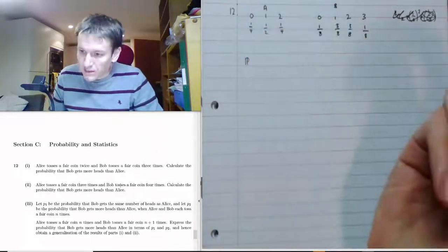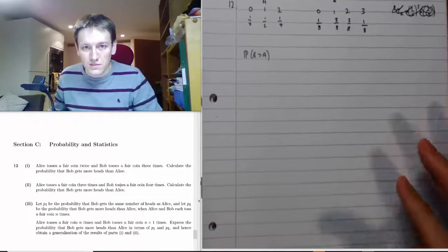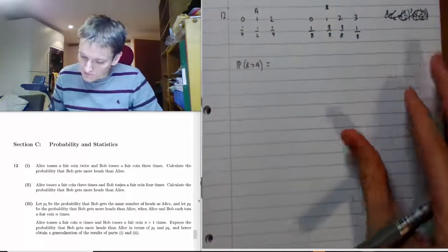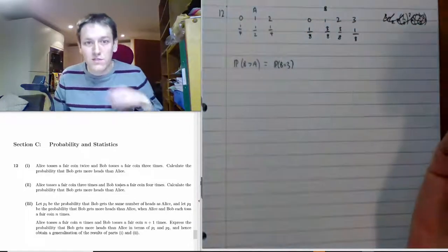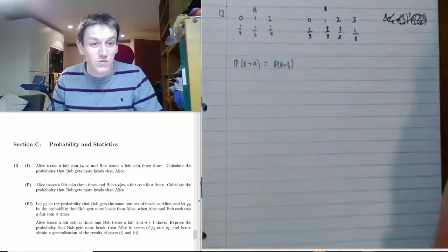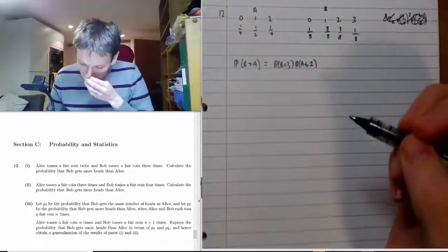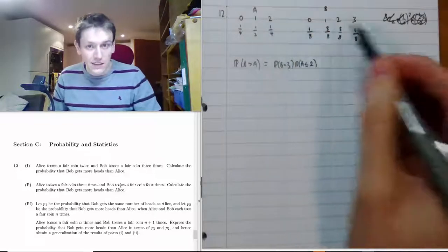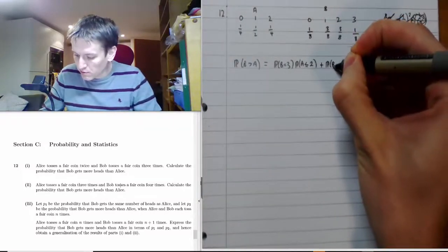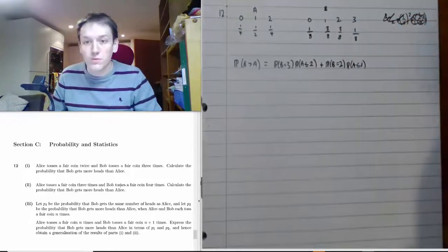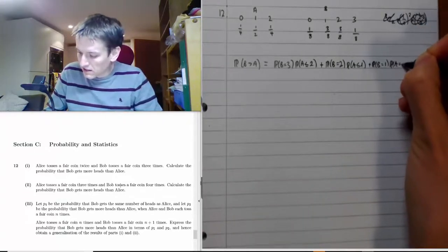The probability that Bob gets more heads than Alice — P(B > A) — breaks into a few cases. It could be that Bob gets three heads, in which case it doesn't matter what Alice gets: P(A ≤ 2) covers any outcome. Another way is that Bob gets two heads and Alice gets less than or equal to one head. We could also have Bob gets one head and Alice gets no heads.